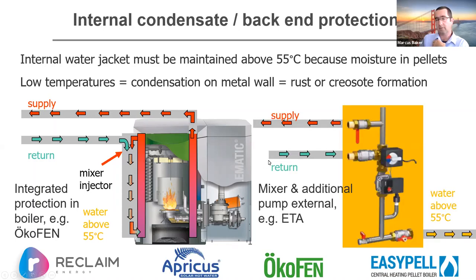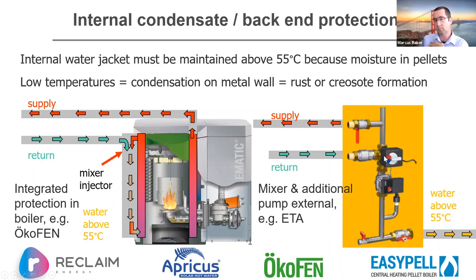Other systems — this is an Etta example — have a mixer and an additional pump. To start with, a lot of the supply hot water from the boiler is mixed back in, essentially closing the loop so the boiler heats its own water until it reaches a good temperature, then slowly reintroduces returning water. There's also pump control — the circulating pump doesn't release before 60 degrees.